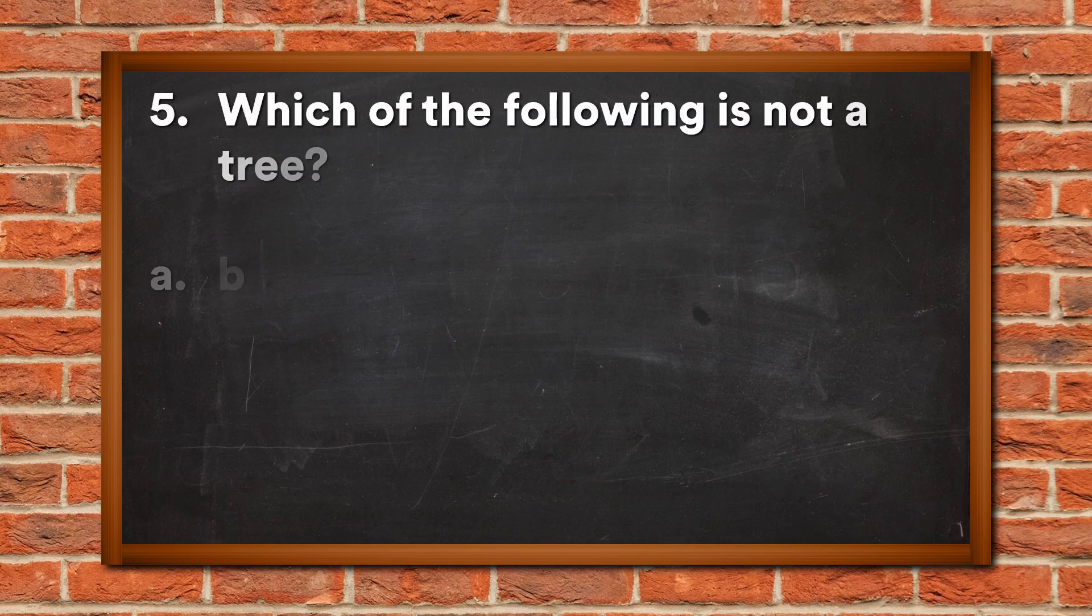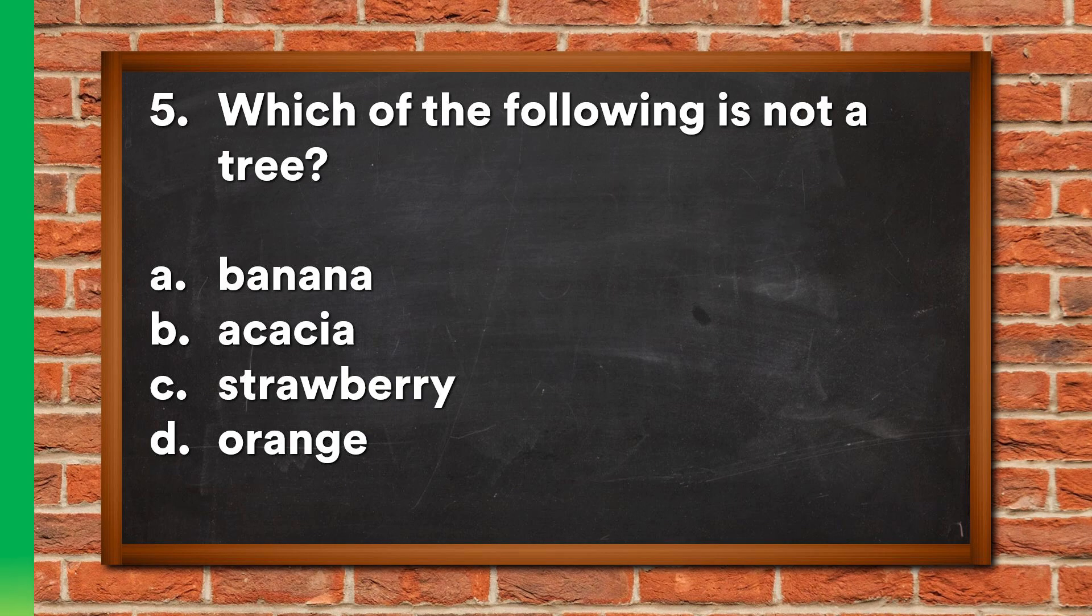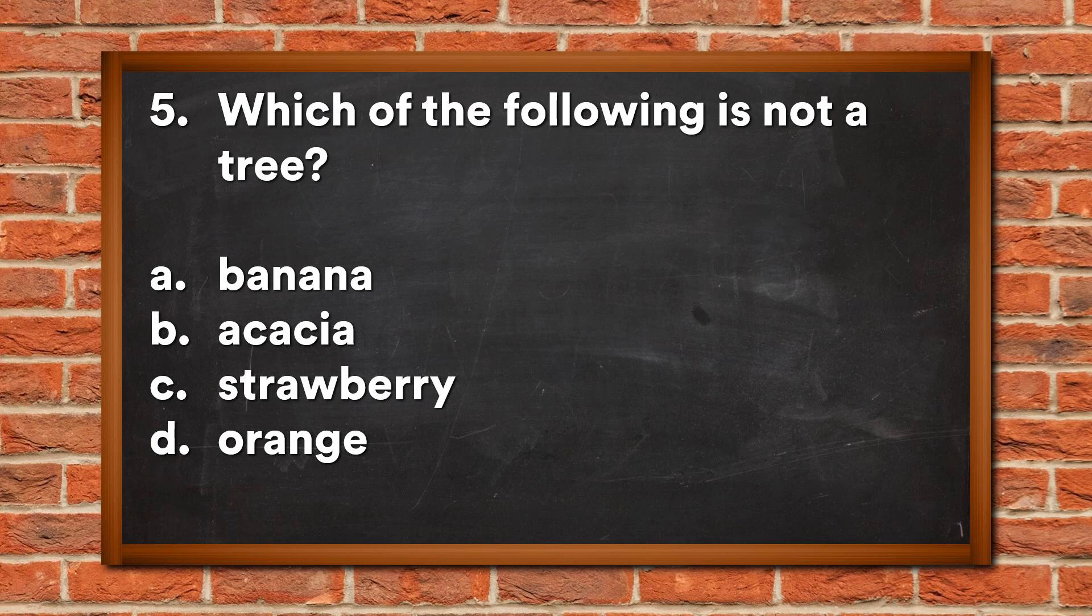Question 5: Which of the following is not a tree? A. Banana, B. Acacia, C. Strawberry, D. Orange. The answer is C, Strawberry.